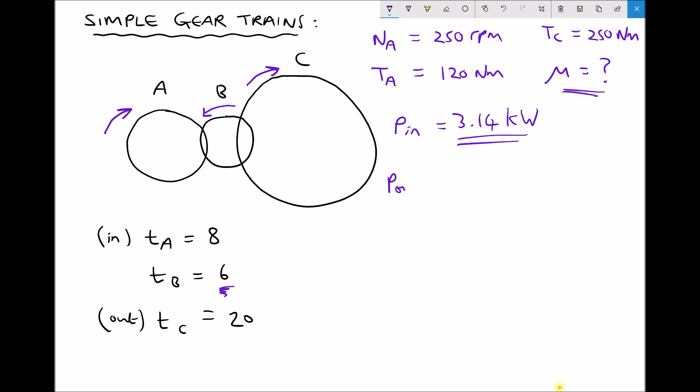We have P_out equals 2πN, it's output power, so N_C T_C over 60.